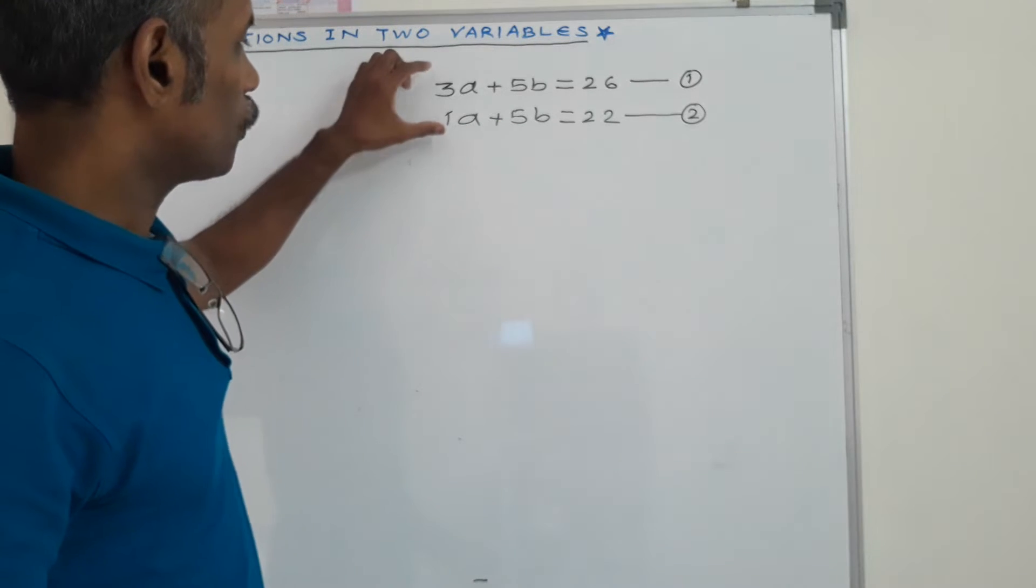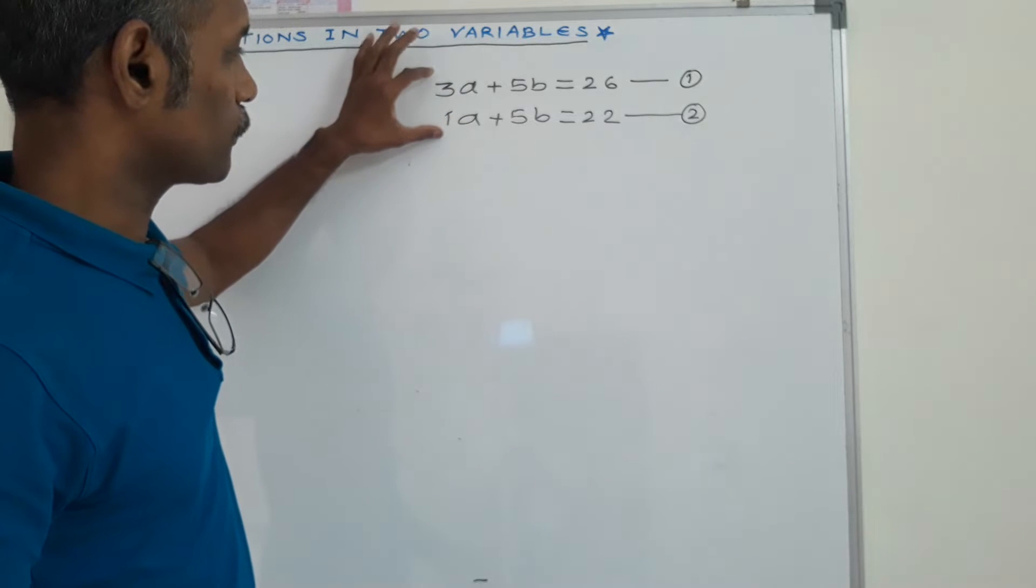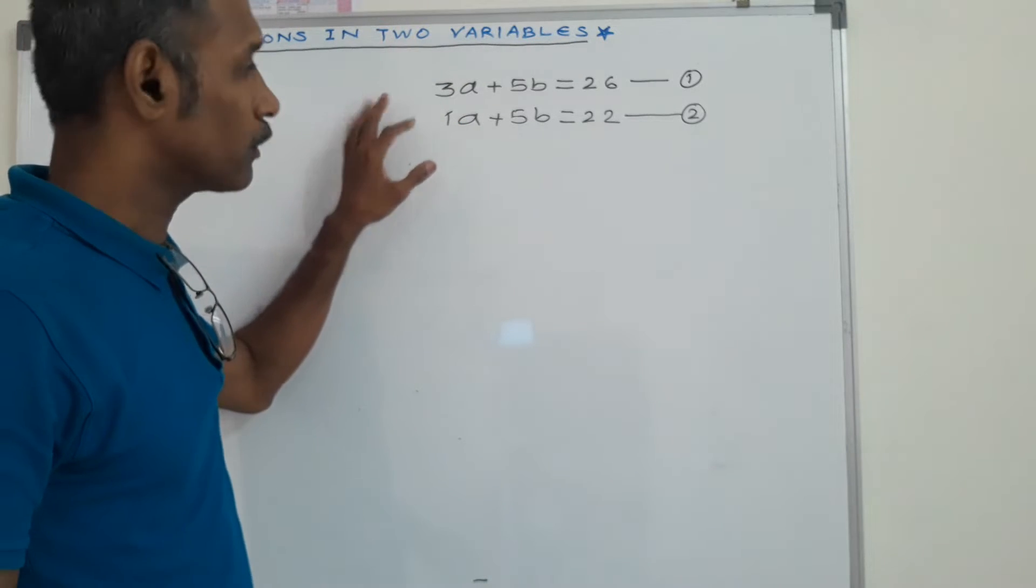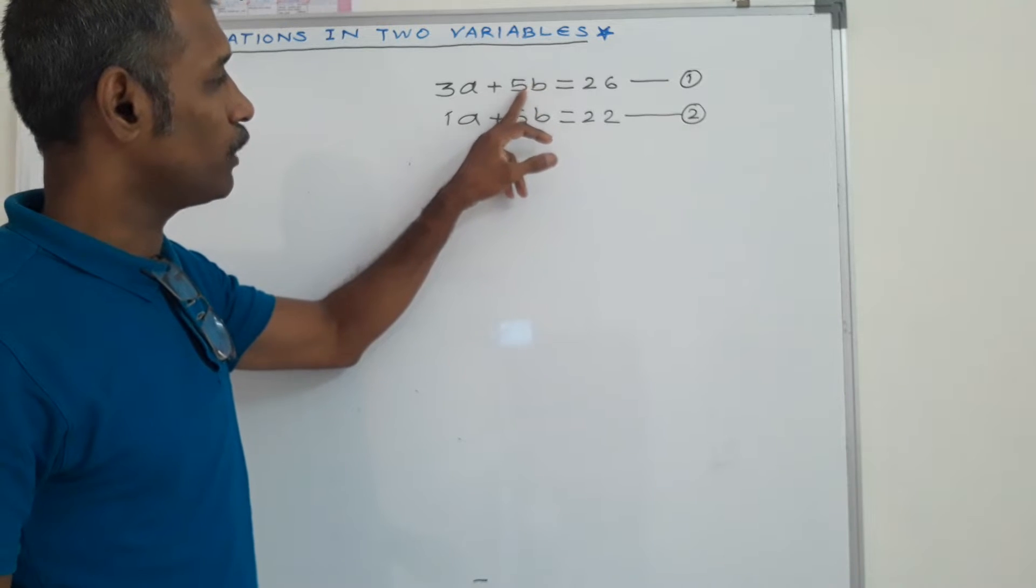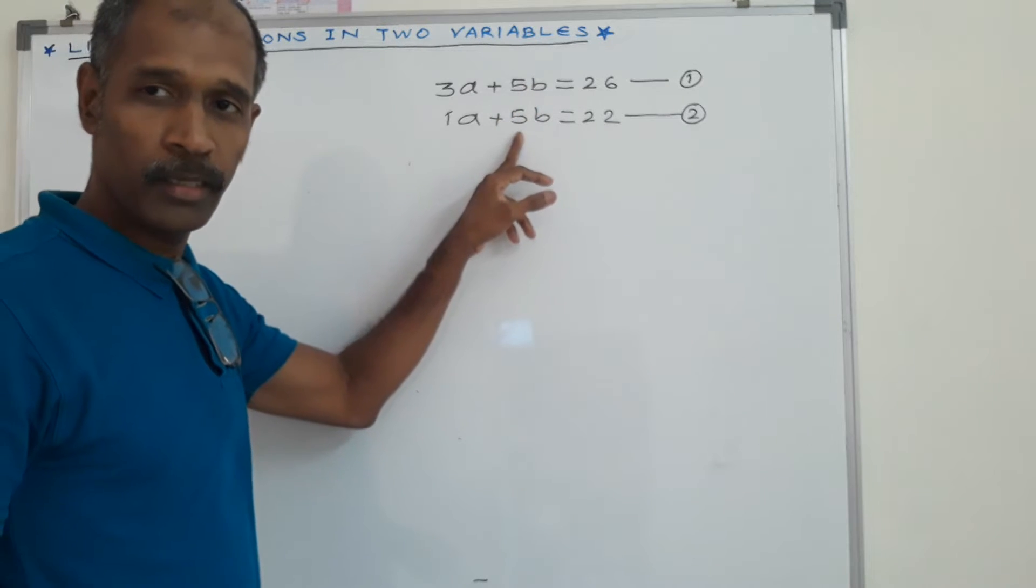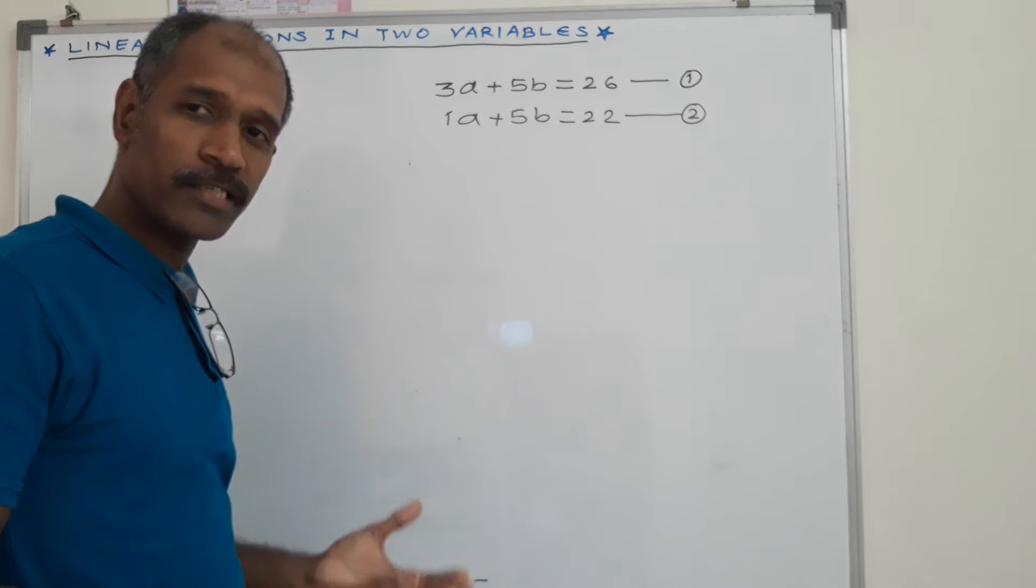Now coefficients of A are different, 3 and 1, but coefficients of B are same as well as their signs are also same.